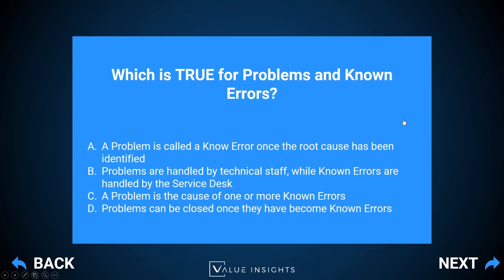Question nine: which is true for problems and known errors? The correct answer is A: a problem is called a known error once the root cause has been identified. By definition, a problem is the unknown cause of one or more incidents. We analyze the problem because we don't know what's causing it. Once we find the root cause, we can no longer call it a problem — it's now the known cause, so we call it a known error. That's the official ITIL term.